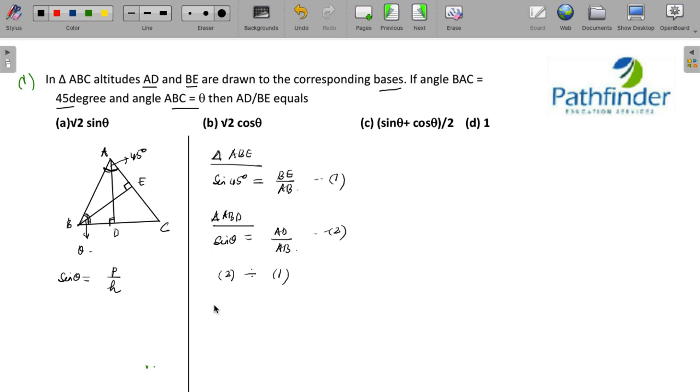So what we will get is sine of theta upon sine 45 on the left hand side. AB will cancel with AB and you will get AD upon BE on the right hand side.